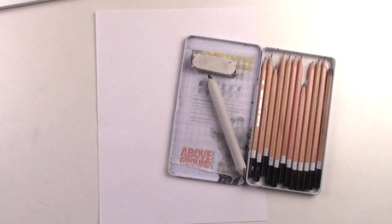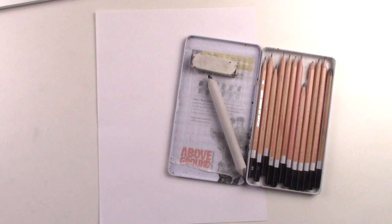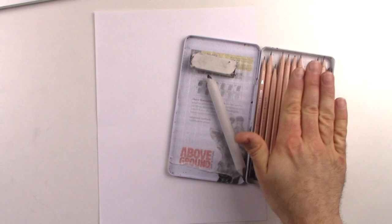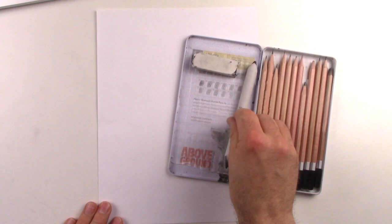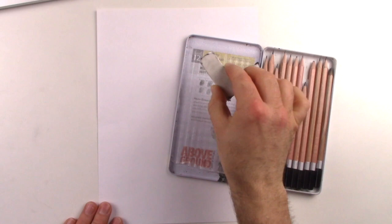Today you're going to need a pencil. If you've got a drawing pencil set, fantastic, but a regular HB pencil will work just fine as well. Probably not going to need a blending stump, but if you've got one, fantastic.